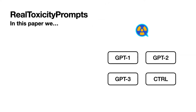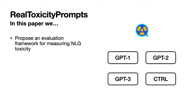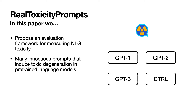Our paper, Real Toxicity Prompts, offers some ideas. We present an evaluation framework for measuring toxicity in natural language generation using a large dataset of naturally occurring prompts. We find many innocuous prompts that induce toxic degeneration in pre-trained language models. We also evaluate mechanisms for steering away from toxic degeneration, but ultimately we find that all models are able to generate toxicity under our framework.